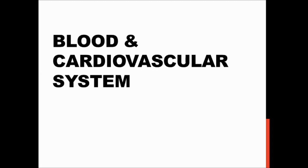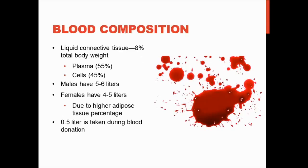This week we're going to talk about blood in the cardiovascular system. It comprises two to three chapters in your textbook. We'll start with blood and then go into the cardiovascular system. Blood is known as one of our liquid connective tissues. You might not consider it a connective tissue since you think of tissues as more solid, but it is one of our liquid connective tissues. It actually comprises about 8% of your total body weight, which is kind of crazy to think about.